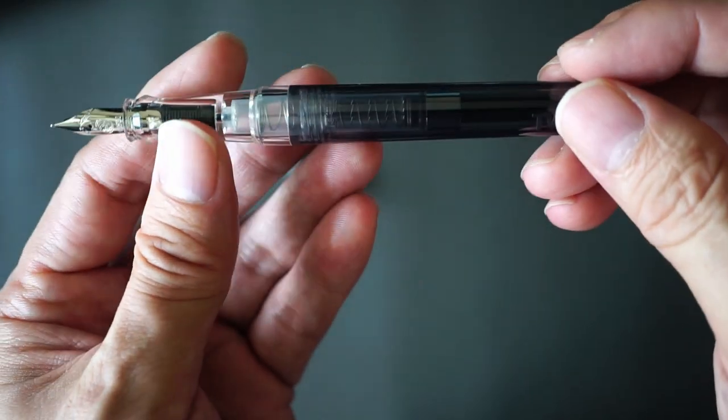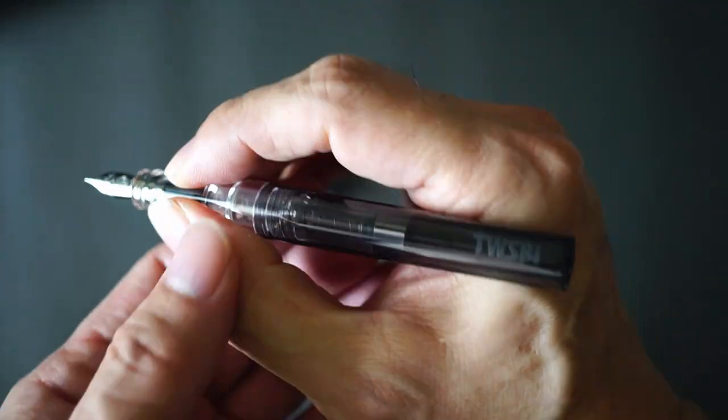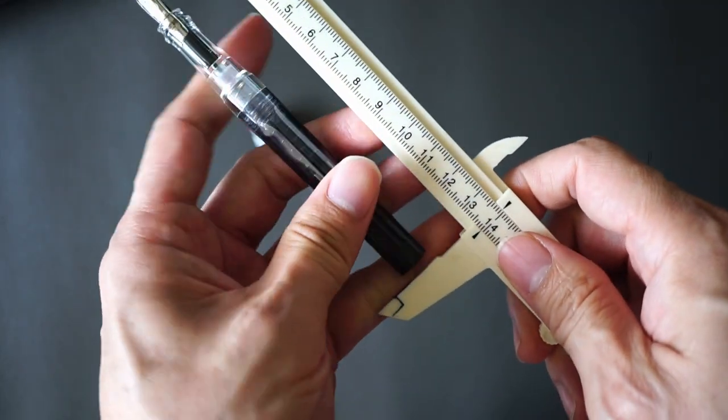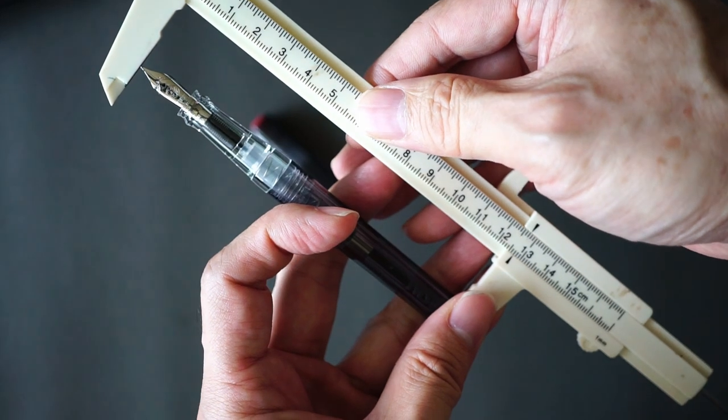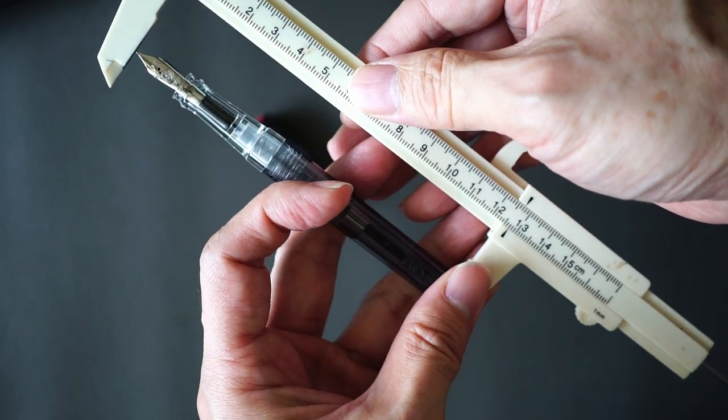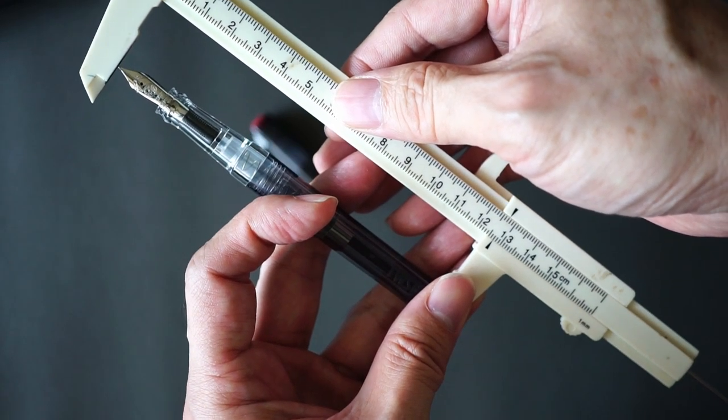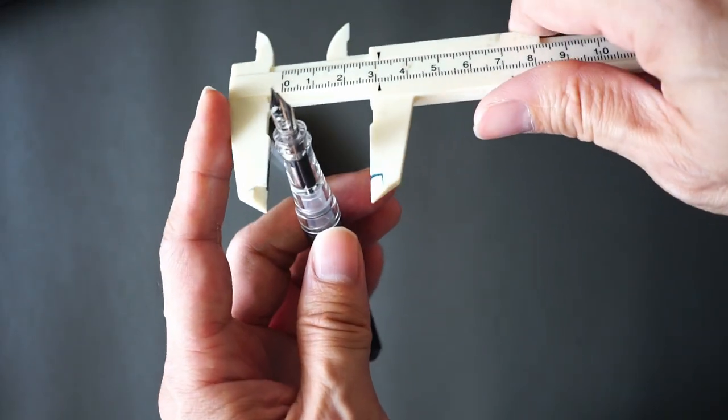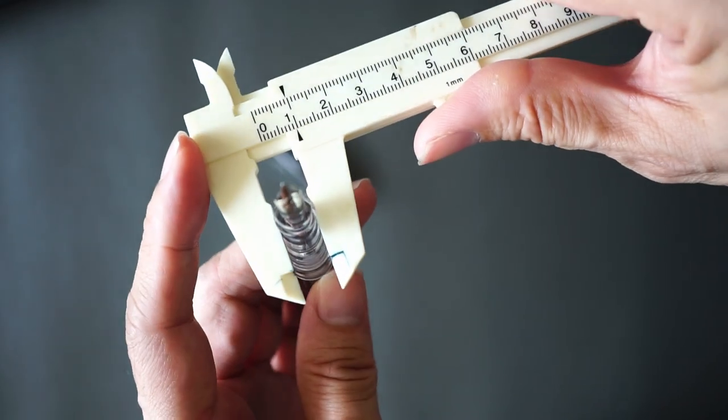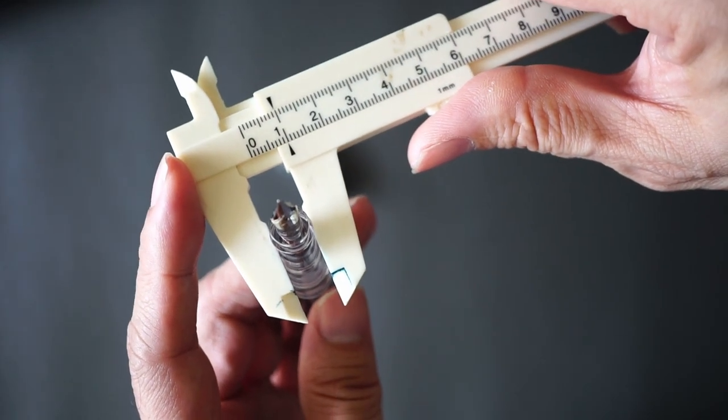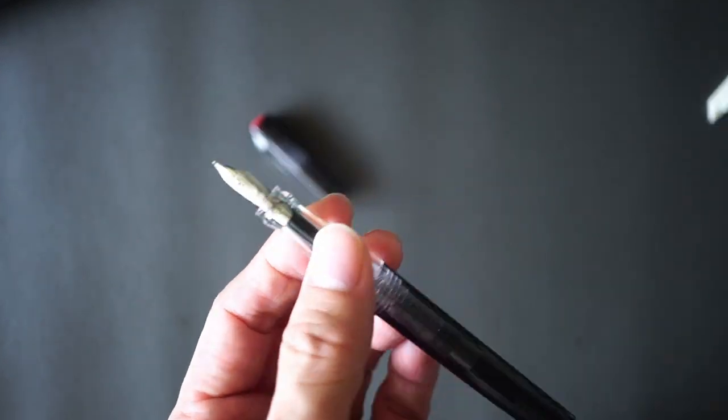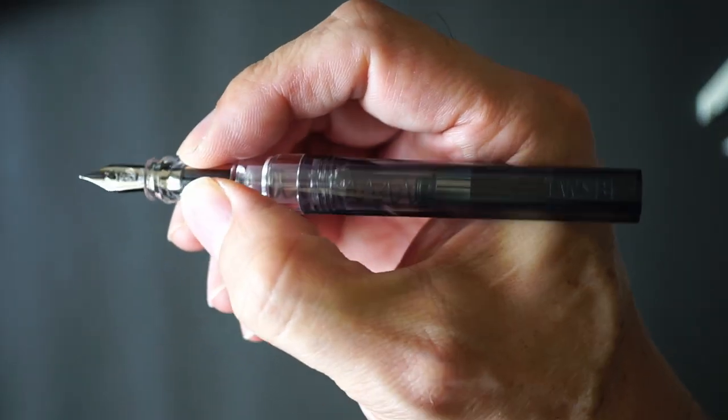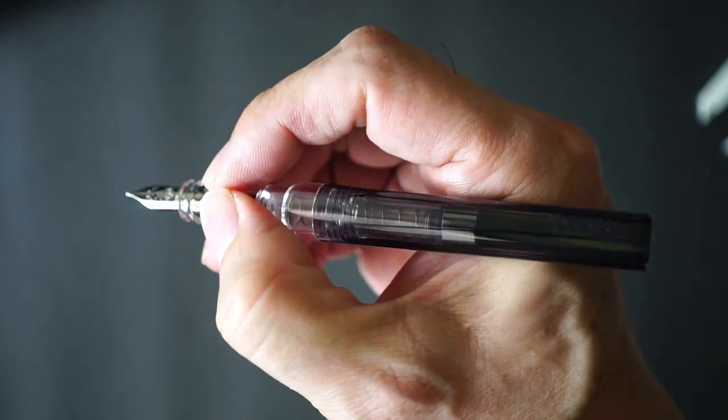Looking at the actual pen, I don't really have the dimensions handy, but I'll just measure the pen on the spot. Lengthwise it's about 12.6 or 12.7 centimeters unposted, and in the middle of the section it's about one centimeter or 10 millimeters. It's not the biggest pen when it's unposted, but I think it should be fine.